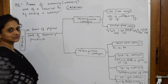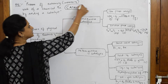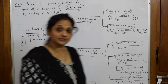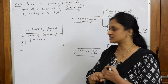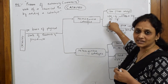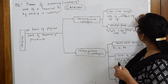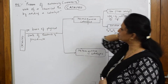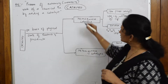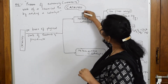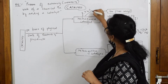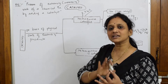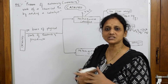In catalysis, based on the physical state of the reactants, products, and catalyst, the process is divided into homogeneous catalysis and heterogeneous catalysis. In homogeneous catalysis, the reactant, product, and catalyst are all in the same physical state — solid-solid-solid, liquid-liquid-liquid, or gaseous-gaseous-gaseous.